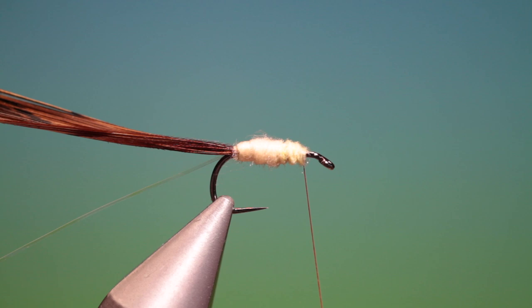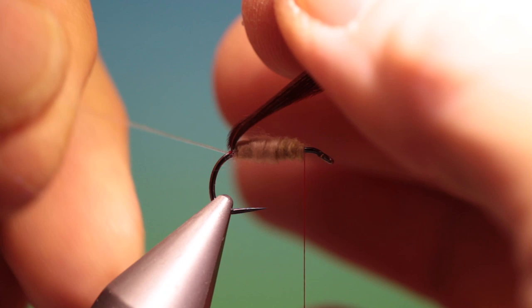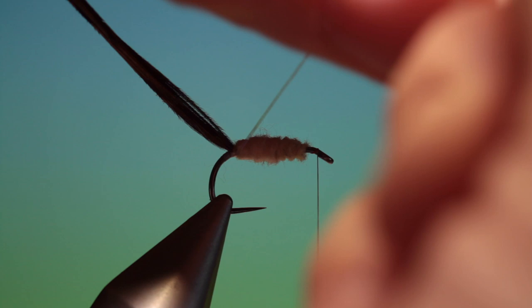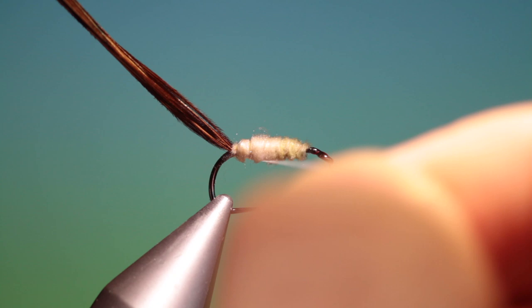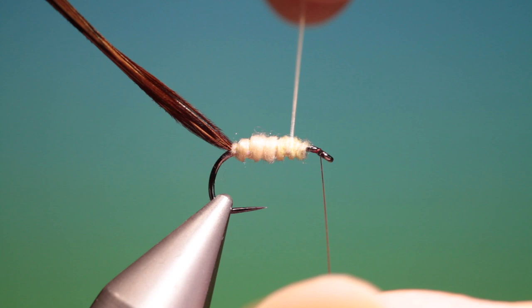Then we take our pearl tinsel and we make a couple of wraps just to form a tag. This will indicate the air bubble and then we go over the body just to give that air bubble effect on the body when it's in the water. Back to here and we just tie that off.